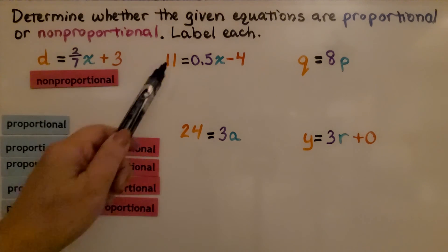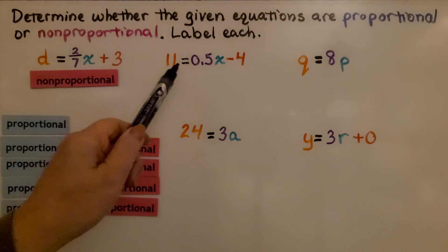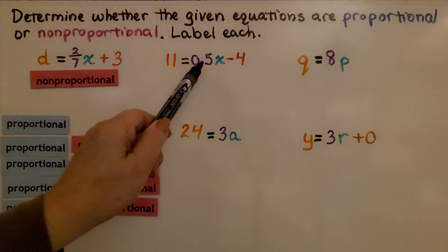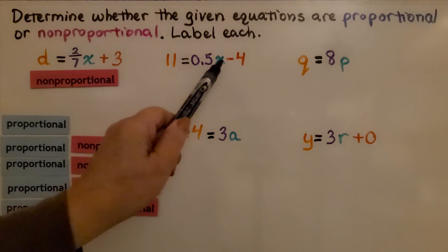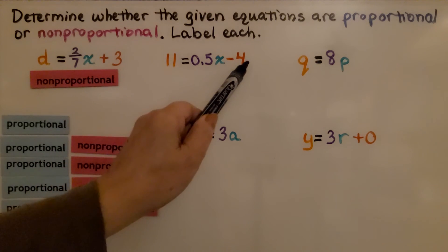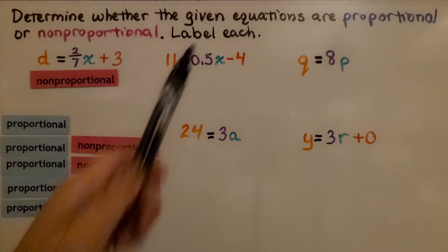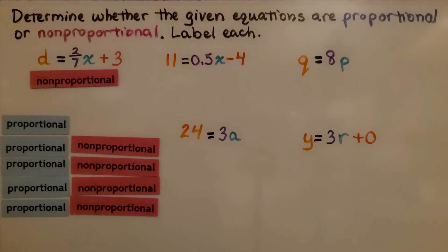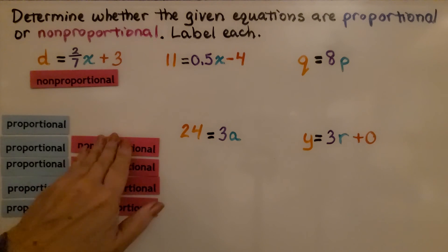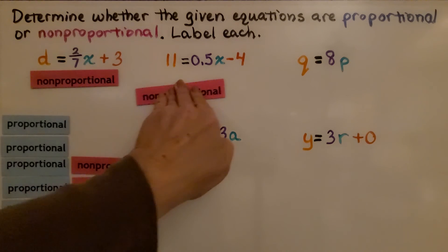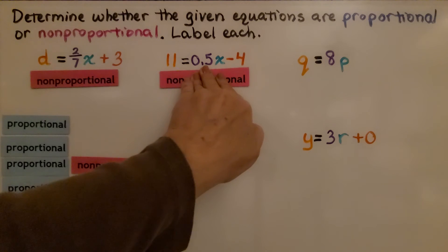Now look at this one: 11 equals 0.5x minus 4. Again, the y-intercept b is not zero, so this is nonproportional.